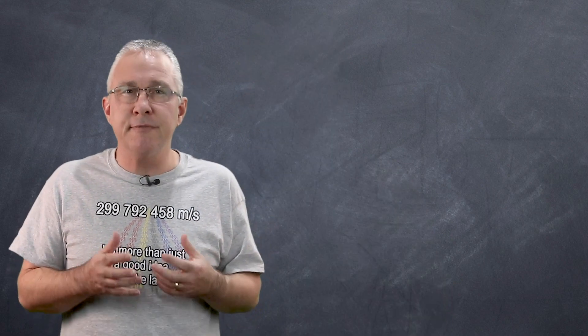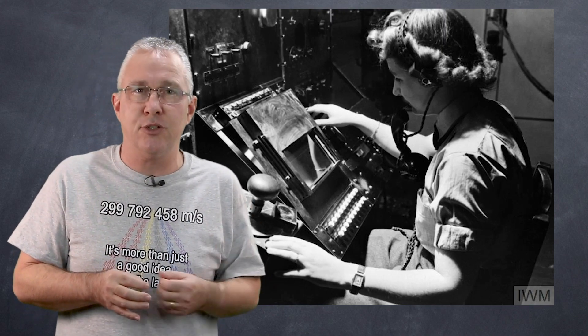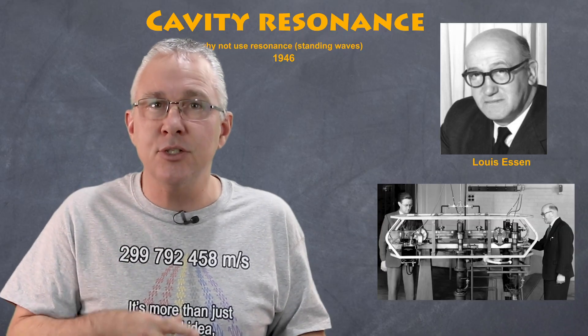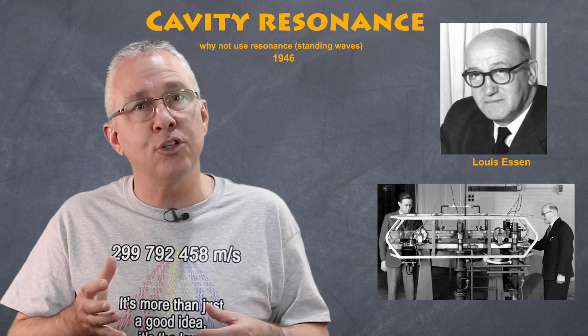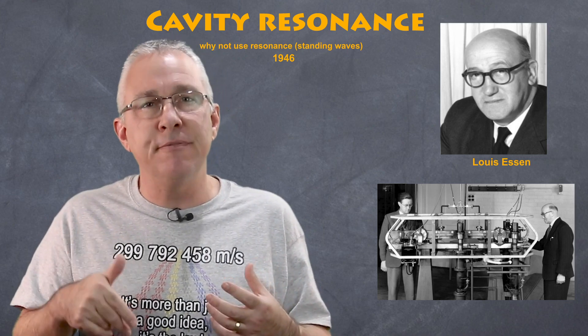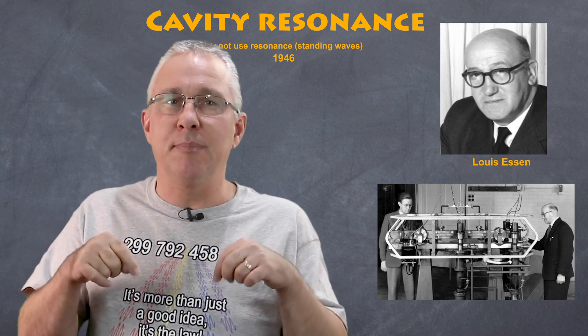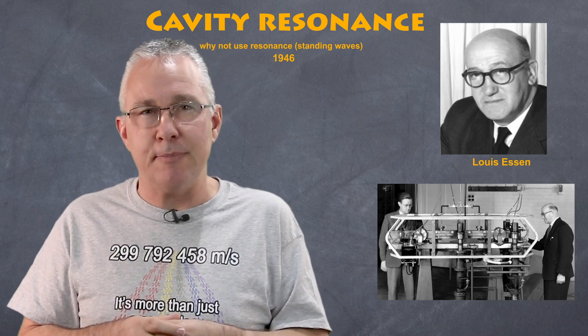Then, in the 1940s, the development of radar required an even more precise value than what Michelson had determined. So, Lewis Essen used a microwave cavity to determine a more accurate value. Now, I covered this in a previous video involving chocolate. And so, again, I'll put the link up here in the link below if you want to have a closer look at his methodology.